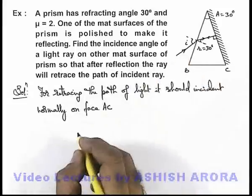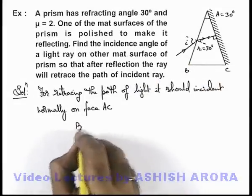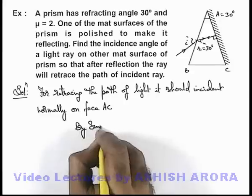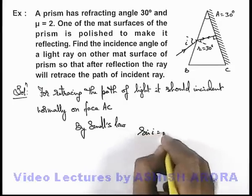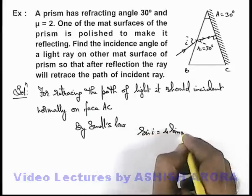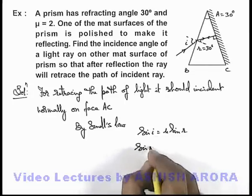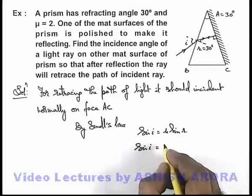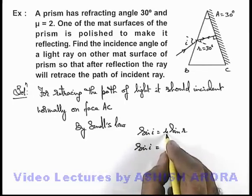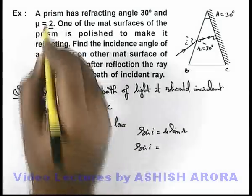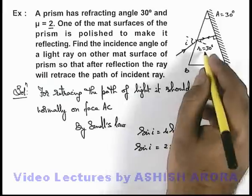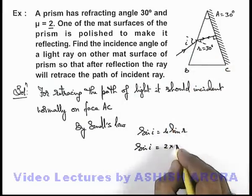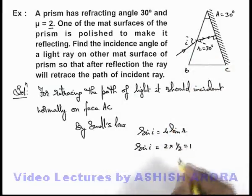For this situation, we can directly use Snell's law. By Snell's law we can write: sin i equals μ sin r. The value of μ we are given as 2, so this will be 2 multiplied by sin r, where sin 30 degrees we can write as 1/2, so this is coming out to be 1.